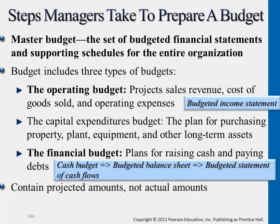The third one, financial budget, links to all the other accounts not mentioned in the first two — basically anything related to debts, anything related to stock market transactions. We plan those out to see what our goal is for next year, and all those numbers factor into the financial budget.